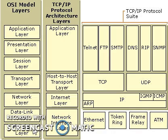By dividing the communication software into layers, the protocol stack allows for division of labor, ease of implementation, code testing, and the ability to develop alternative layer implementations. Layers communicate with those above and below via concise interfaces. A layer provides a service for the layer directly above it and makes use of services provided by the layer directly below it. For example, the IP layer provides the ability to transfer data from one host to another without any guarantee of reliable delivery or duplicate suppression.